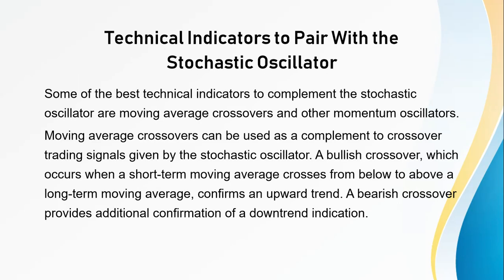Now let's see what technical indicators to pair with the stochastic oscillator to get good signals. Some of the best are moving average crossovers and other momentum indicators. Moving average crossovers can complement the crossover trading signals given by the stochastic. A bullish crossover occurs when a short-term moving average crosses from below to above a long-term moving average, confirming an upward trend, while a bearish crossover provides additional confirmation of a downtrend.